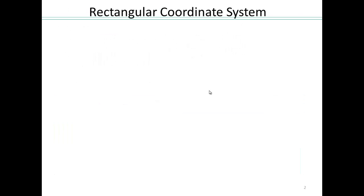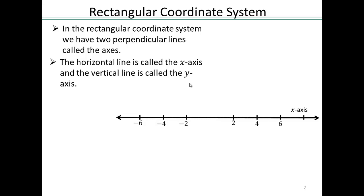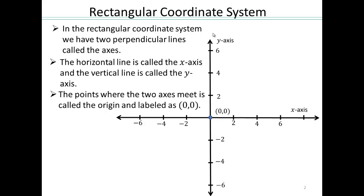In the rectangular coordinate system, instead of having just one number line, you're going to have to work with two number lines perpendicular to each other. They are called the axes. The horizontal axis is called the x-axis, and the vertical line is called the y-axis. The point where the two axes meet is referred to as the origin, and is labeled as coordinates (0,0).